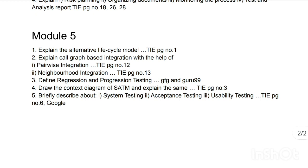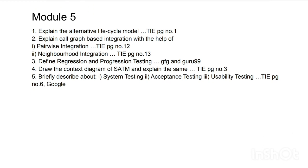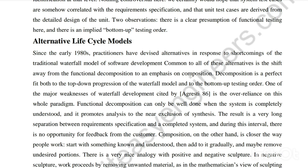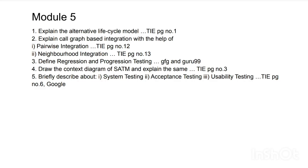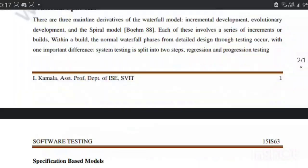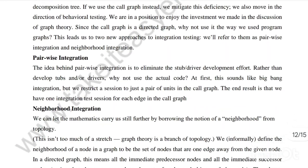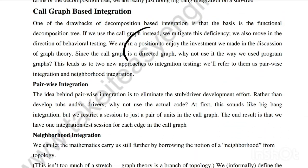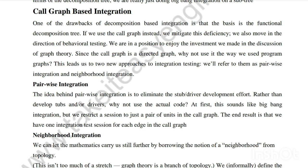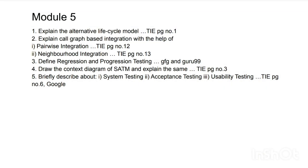Moving on to Module 5, we have five questions. The first is: alternative life cycle models — a very important concept found at page number 1. The second is: explain call graph based integration with the help of pairwise integration and neighborhood integration — a very important concept from an exam point of view, found at page number 12. Pairwise and neighborhood integration concepts are both present there.